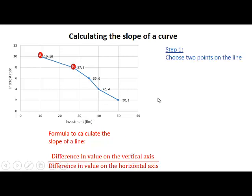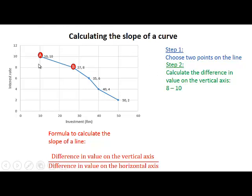We are going to use point A and point B. To calculate the difference in value on the vertical axis, the interest rate decreases from 10 to 8. So the difference in the interest rate between point A and point B is minus 2. We take the value at B minus the value at A, which gives us minus 2.